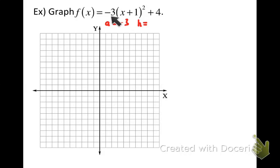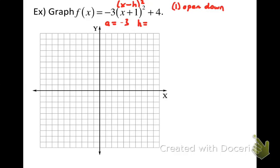The a in vertex form has exactly the same effect as it did in standard form. The fact that a is negative means I'm going to have a parabola that opens downward. Now, remember that where h appears, it's in the form x minus h. Since I've got addition here rather than subtraction, h is negative — h is actually negative 1. h always has the opposite sign of what you see in the parentheses. And then k is the value at the end: k equals 4.